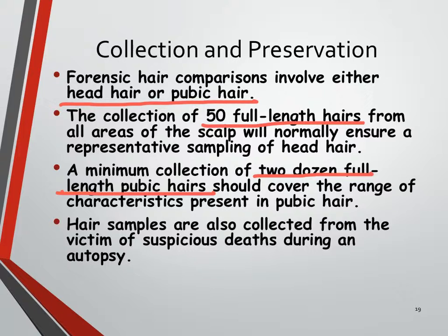Let's talk about collection and preservation. Even though you grow hair all over your body, there are really only two sets of hairs useful for forensic hair comparisons: head hairs and pubic hairs. If you are using head hairs, you need to collect 50 full-length hairs from all different areas of the scalp to ensure a good representation of all the different features that person has. If you are using pubic hair, you need a minimum collection of 24 full-length pubic hairs taken from all areas of the pubic region — it's all about collecting a good sampling of that person's hair.